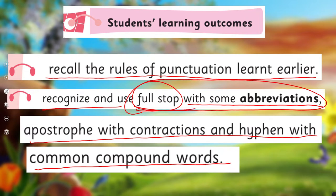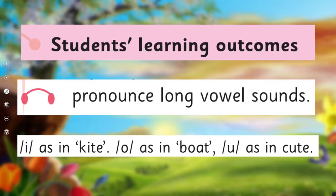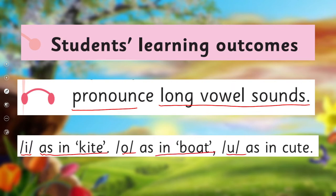Lecture 4, under the title of pronunciation skills, we'll learn about long vowel sounds, and we'll cover the SLO to pronounce long vowel sounds such as the 'i' sound as in kite, 'o' sound as in both, and 'u' sound as in cute.